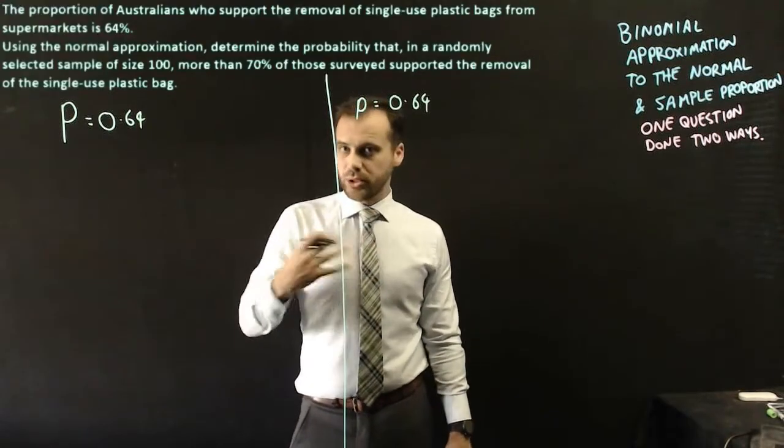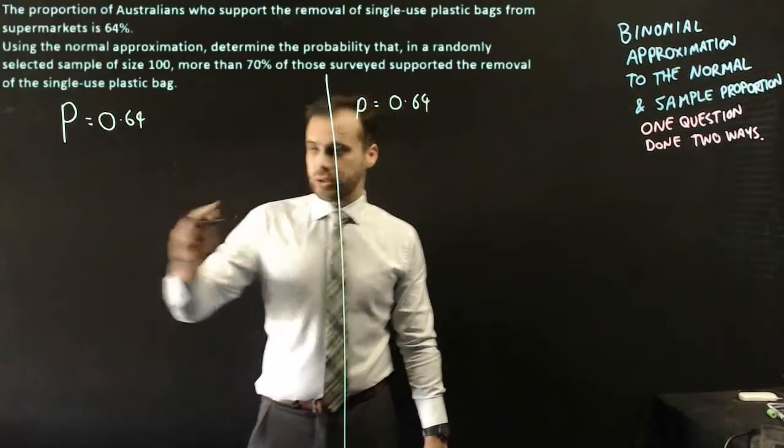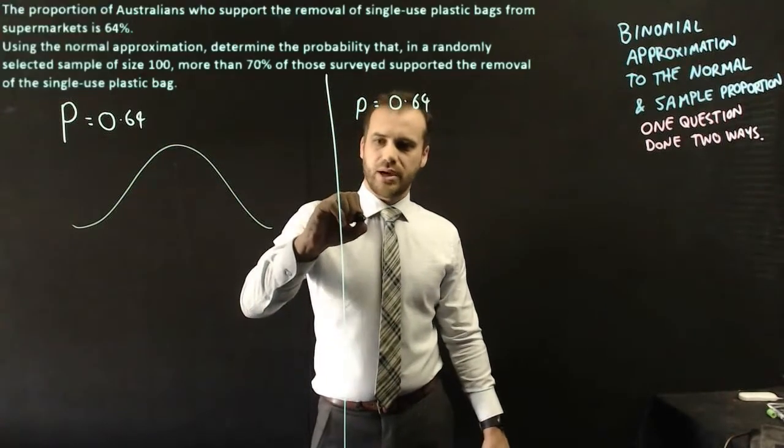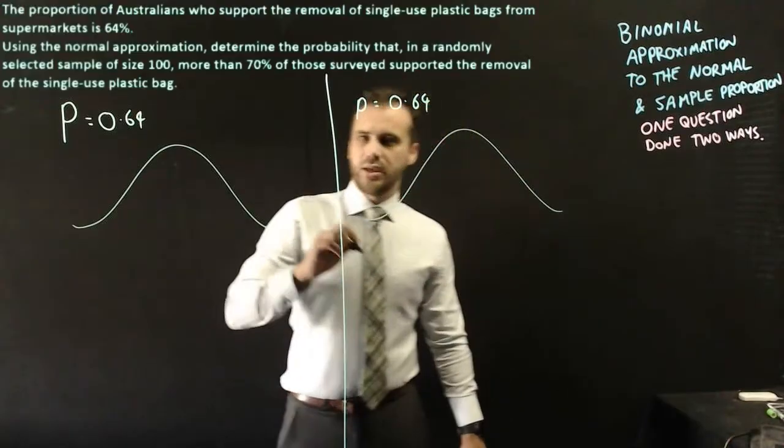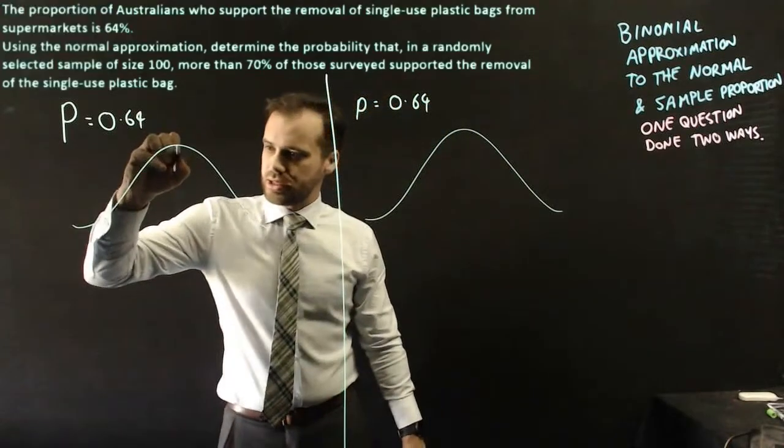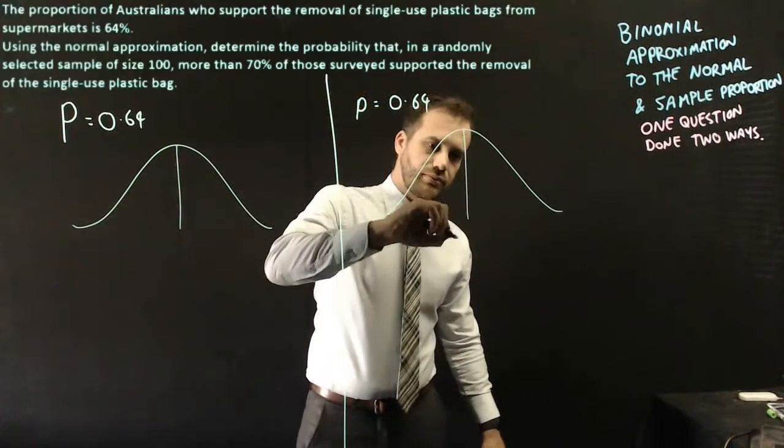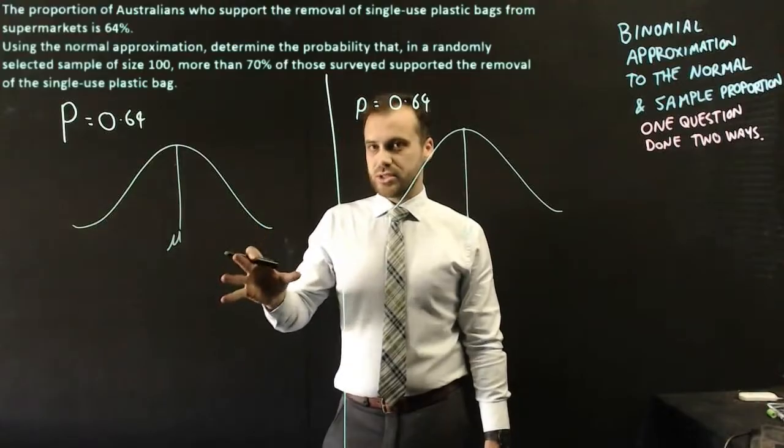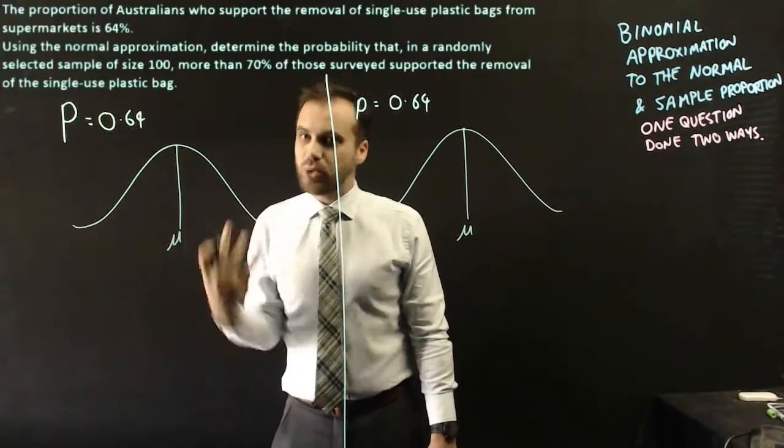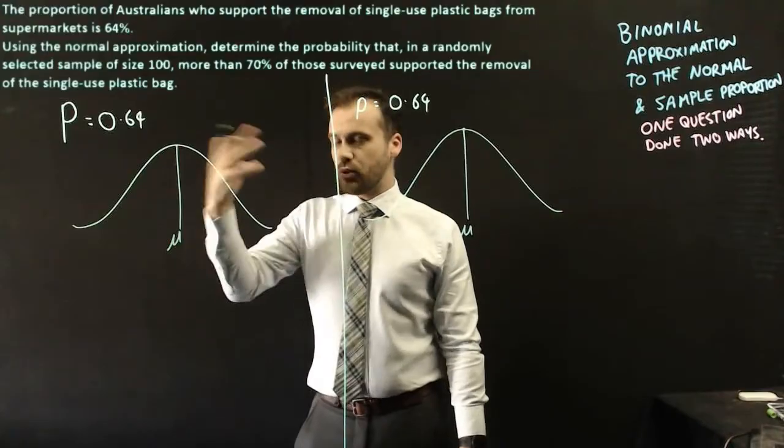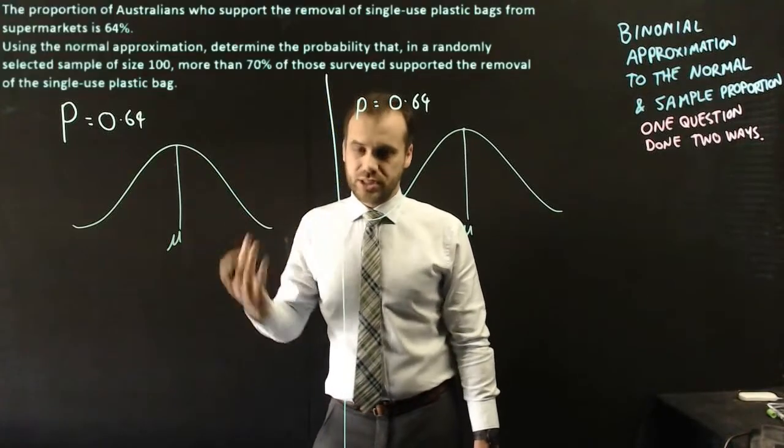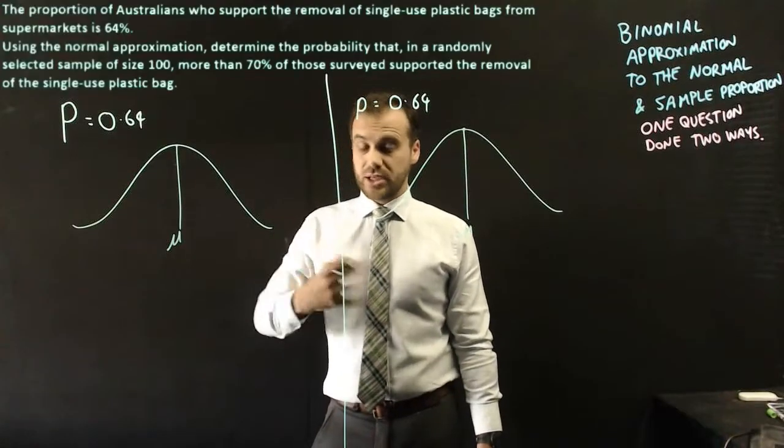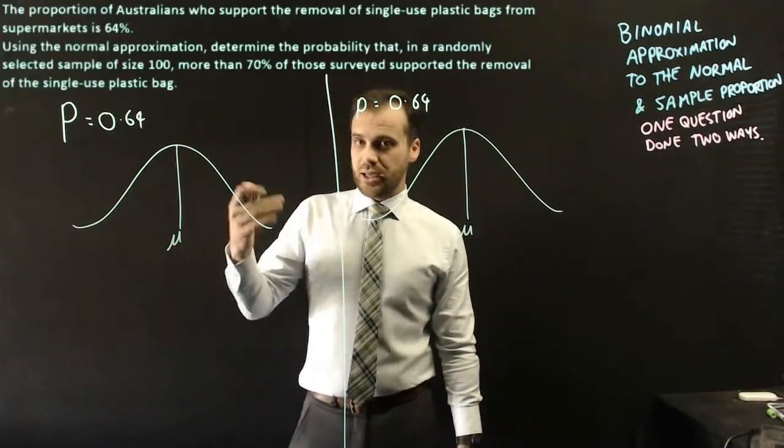Now we're using a normal approximation to a binomial, which means that we're going to end up with a normal curve. What is going to change depending on my method is the mean. The mean on this side, I'm going to be talking about the mean proportion. And the mean proportion is just 0.64. If you took a bunch of samples from this population, you would expect in the long run that it would be 0.64.